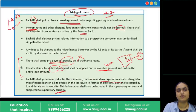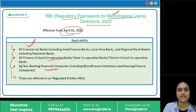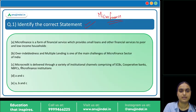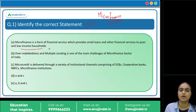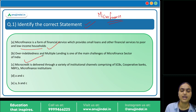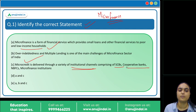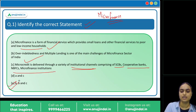Coming to the first question — identify the correct statement. Statement one: microfinance provides small loans and financial services to poor and low-income households — correct. Statement two: over-indebtedness and multiple lending are challenges of the microfinance sector — correct. Statement three: microfinance is delivered through channels such as scheduled commercial banks, cooperative banks, and NBFCs — correct. The answer is option E — all are correct.